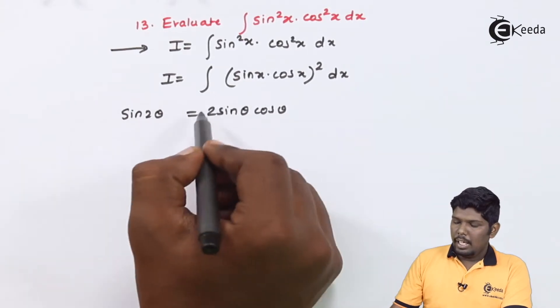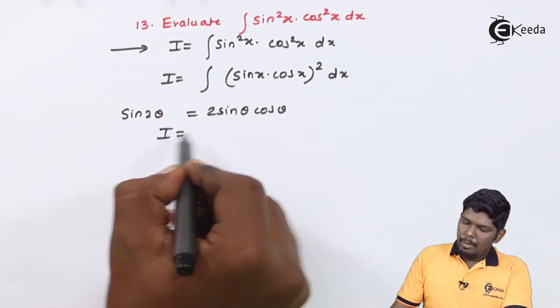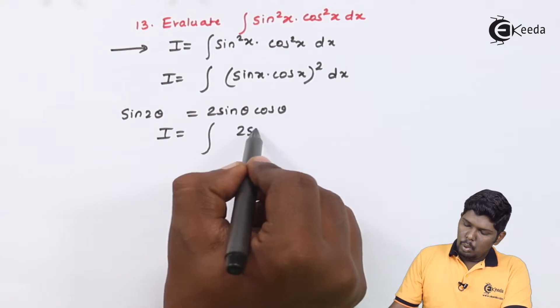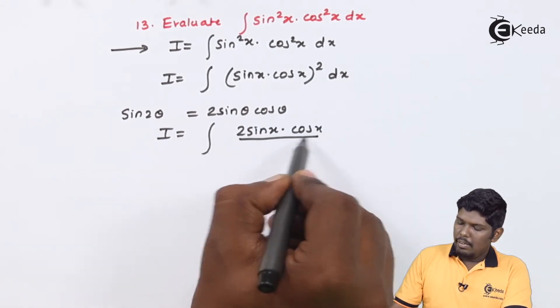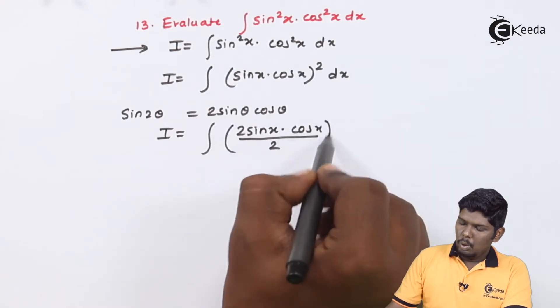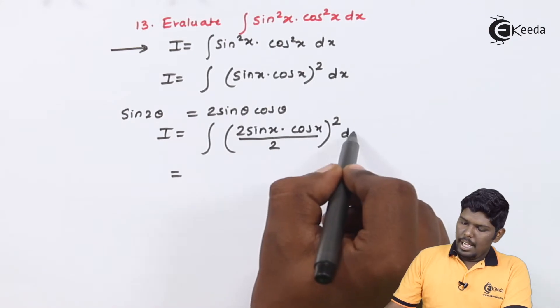For that we will give 2 and at the same time I will balance that 2 by dividing it by 2. I will have (2 sin x cos x / 2)² dx.